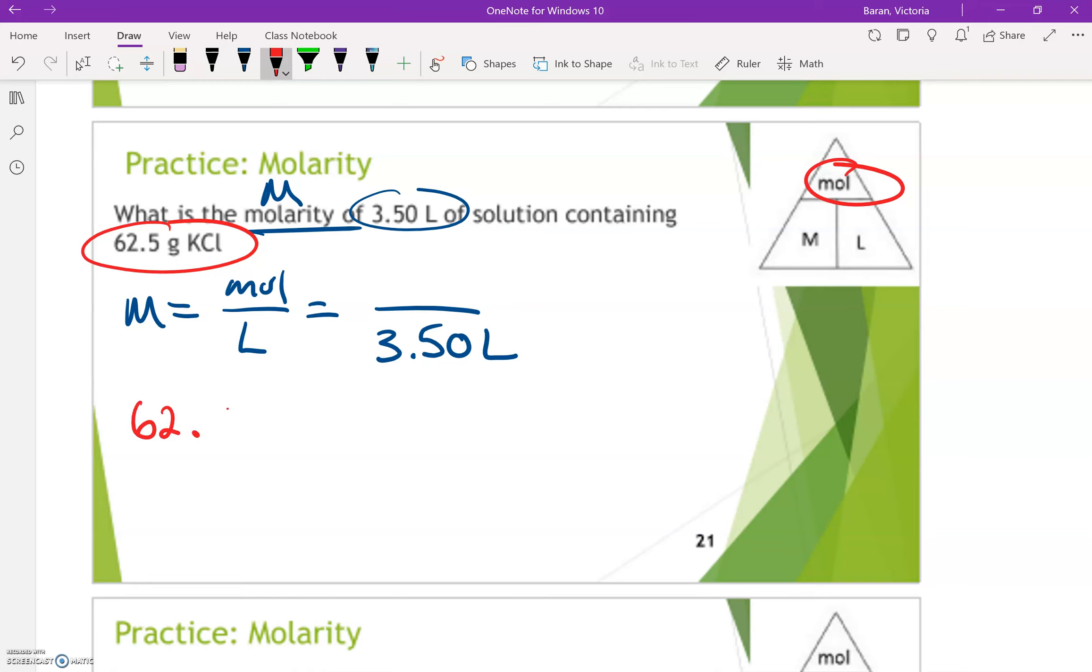So I would have 62.5 grams and I would set up a picket fence and I need to get that into moles. So I need to first find the molar mass of KCl.